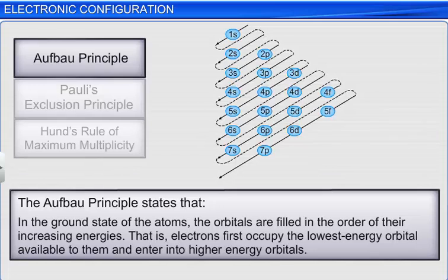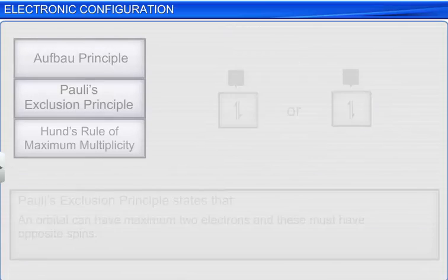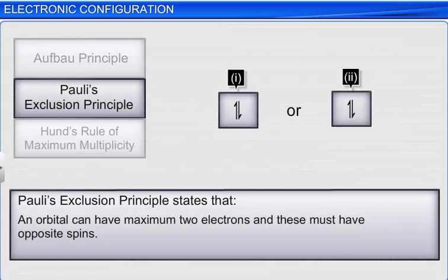Second is Pauli's exclusion principle. It states that an orbital can have a maximum of two electrons and these must have opposite spins.